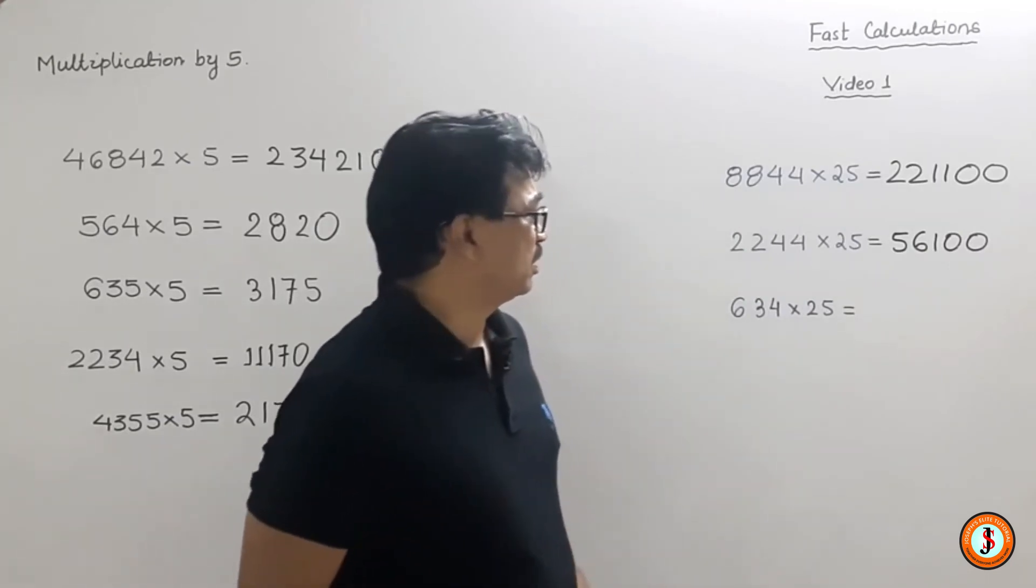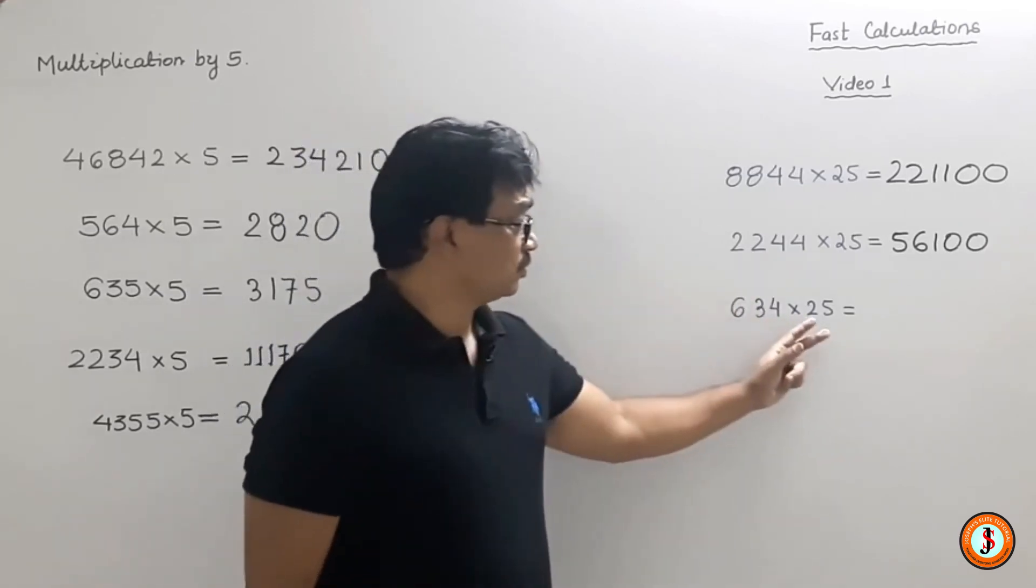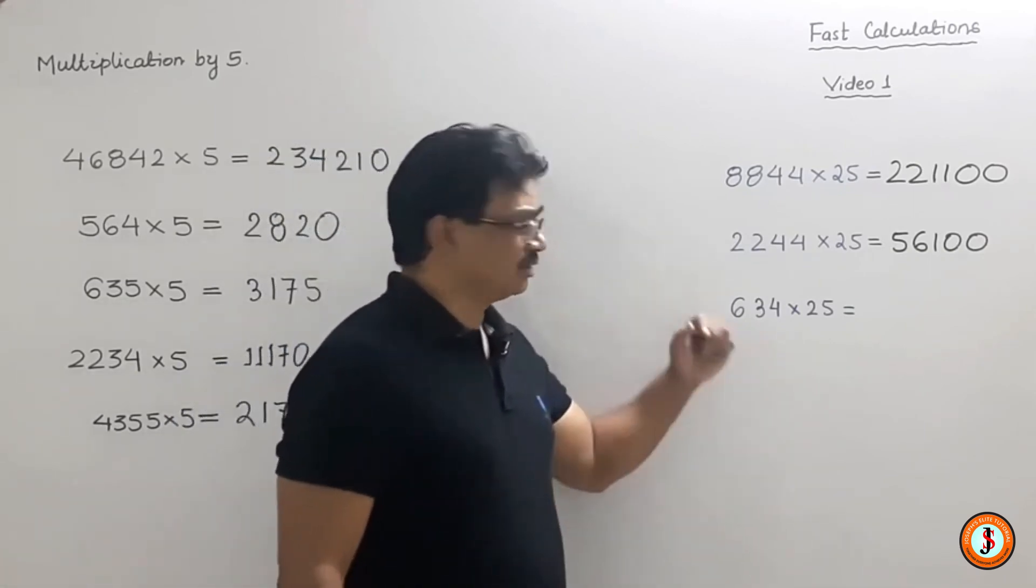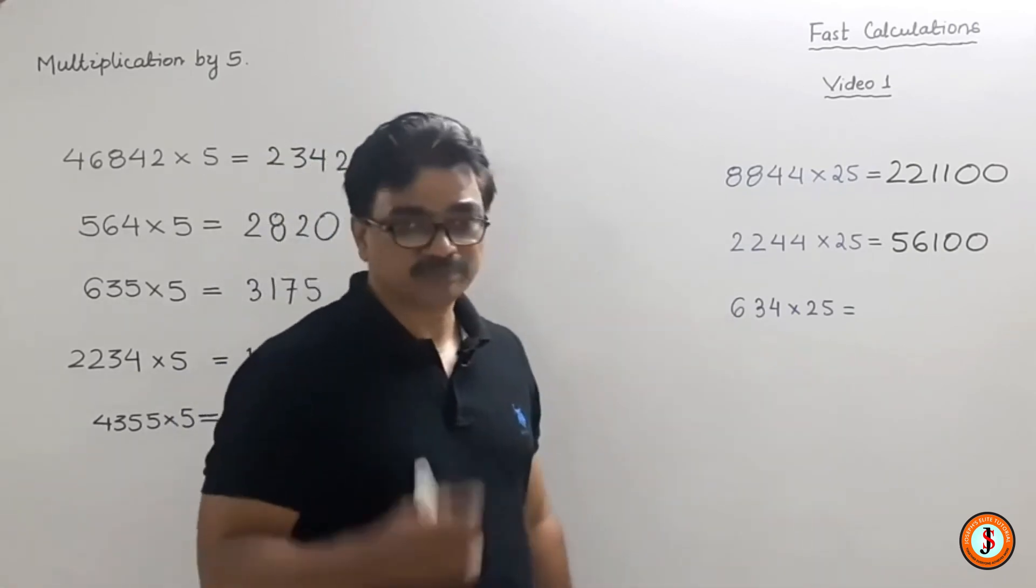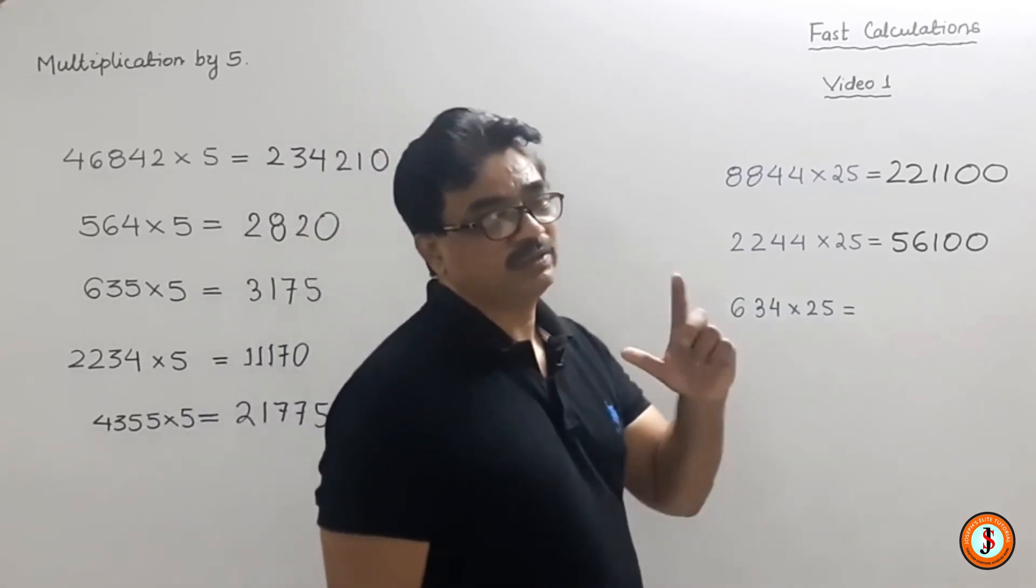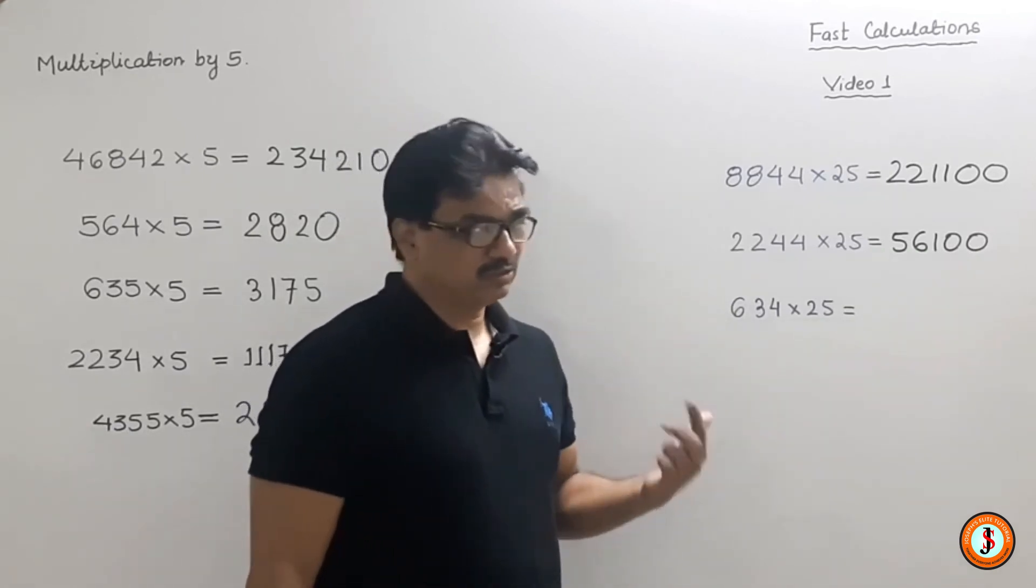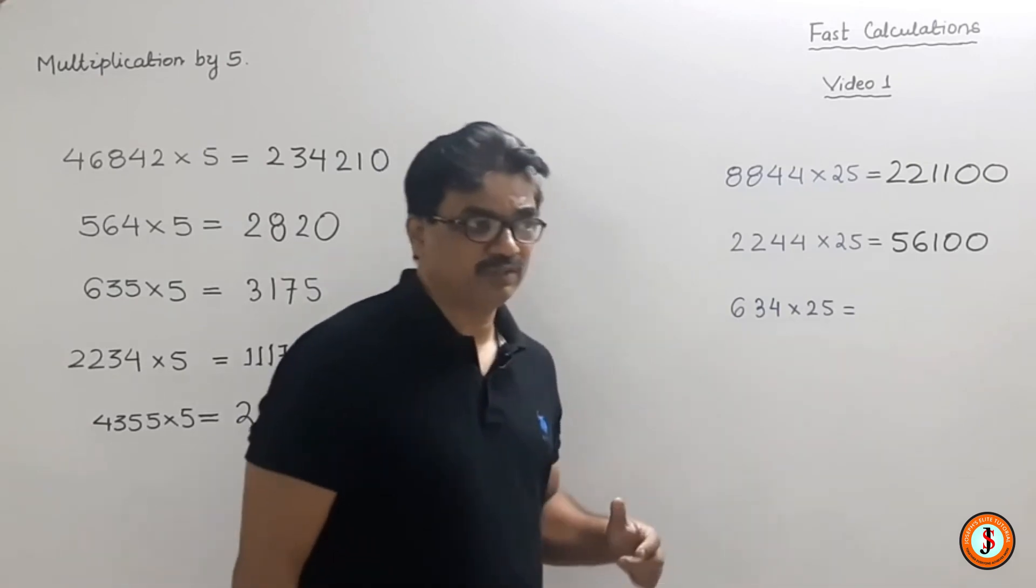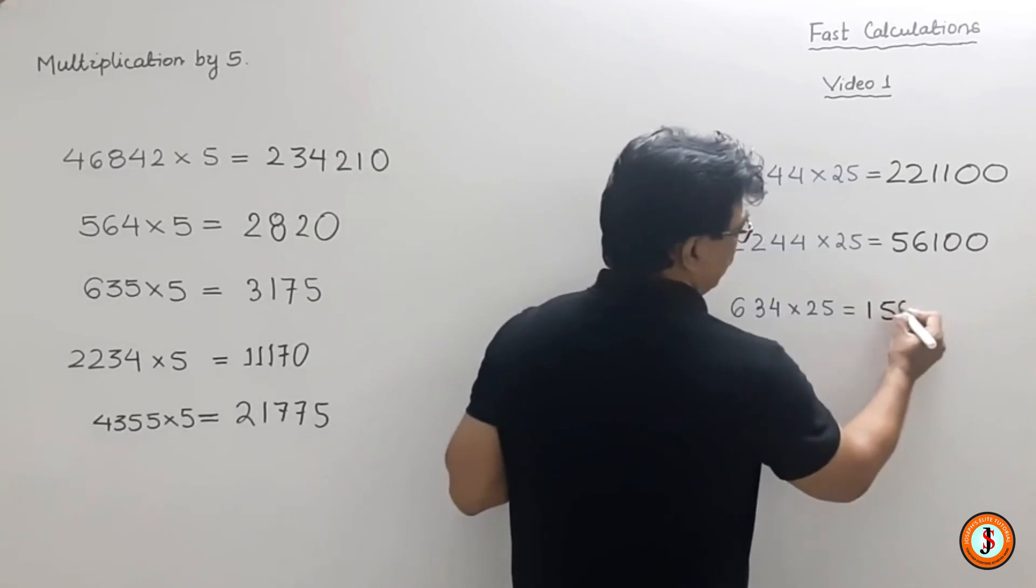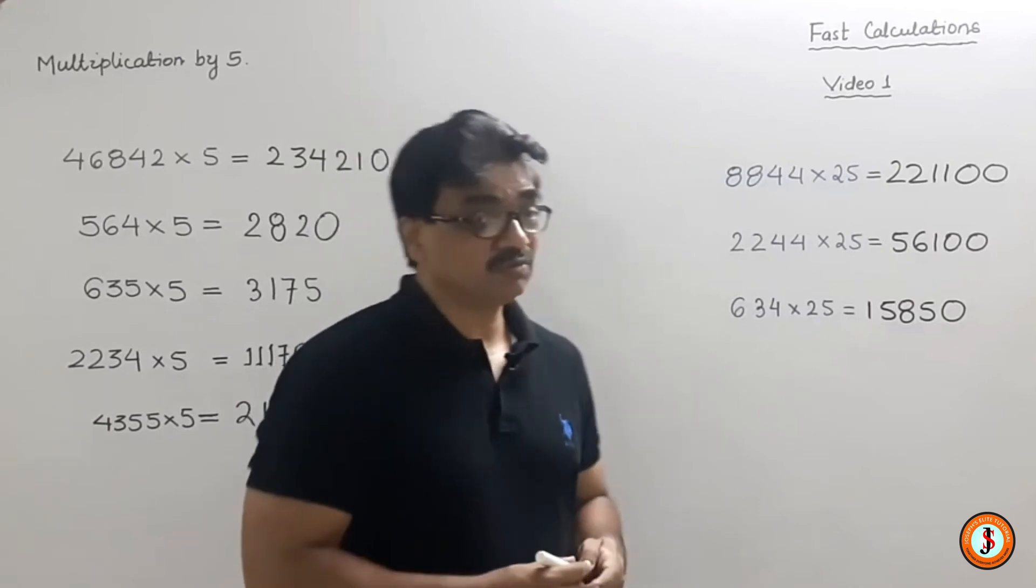Now 634 × 25. People think taking half of a half is difficult, but it will be difficult. The first half is very easy: 317. Now halve 317. First half of 300 is 150, and half of 17 is 8.5, so 158.5. If we multiply 158.5 by 100, this will be the answer. So this is video one.